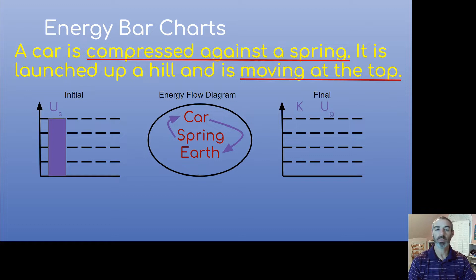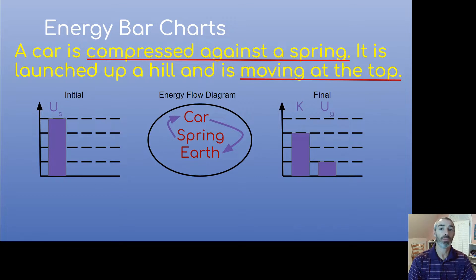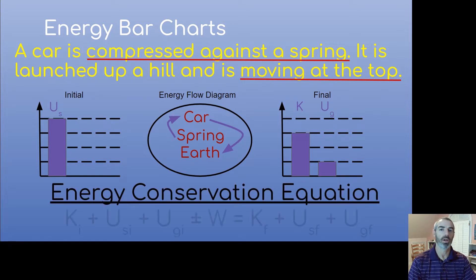In the final situation, because the cart is still moving at the top, we have kinetic energy. We also have gravitational energy because its height is greater than zero. So we have kinetic and gravitational in the final. Now the heights matter: I drew a total height of four for spring energy, which means the total height for kinetic and gravitational combined has to be four. I can split it up however I want because it's a qualitative representation — I chose three kinetic and one gravitational, but two and two or one and three would also work, as long as it adds up to the total.